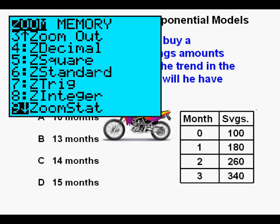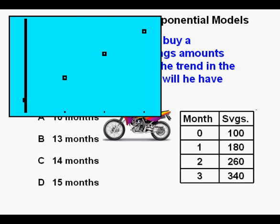Next we'll take a look at the points. We'll go to ZOOM. Scroll down to OPTION 9, ZOOM STAT. Press ENTER. We see the points in a line indicating a linear relation.